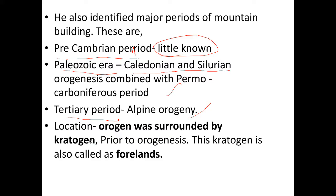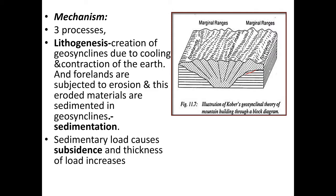Regarding the location of orogenesis, Kober says the orogen was surrounded by kratogen — the rigid landmass — prior to orogenesis. This kratogen is also called 'forelands.' The compression comes from both sides of the geosyncline through the forelands, forming marginal ranges at the margins and a median mass in the middle.